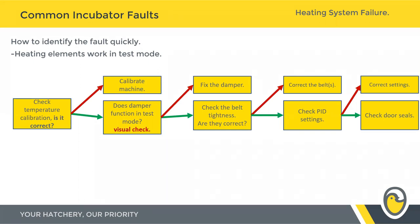If calibration is correct, check whether the damper functions in test mode — visually confirm that all dampers are correctly lined up. Then check the belt tightness: are the fans in the machine physically running at the correct RPM? If not, the usual culprit is belt tightness. Then check the PID settings, which are hidden away inside the control and rarely need changing, but we've had instances where customers went in, changed the settings while testing, and forgot to put them back — which makes one incubator behave very differently from the others.